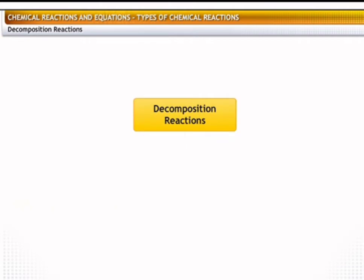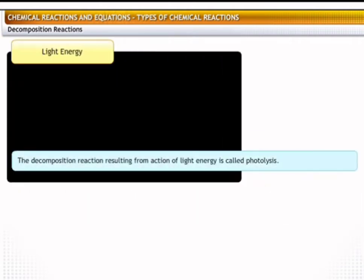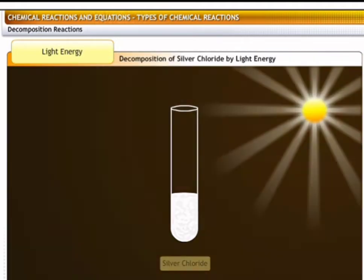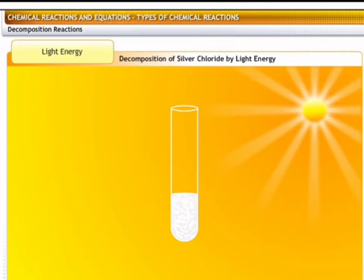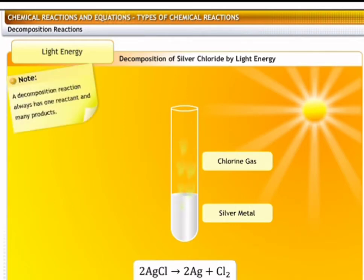Finally, the decomposition reaction resulting from the action of light energy is called photolysis. For example, when silver chloride is exposed to light, it decomposes to form silver metal and chlorine gas. Remember that a decomposition reaction always has one reactant and many products.